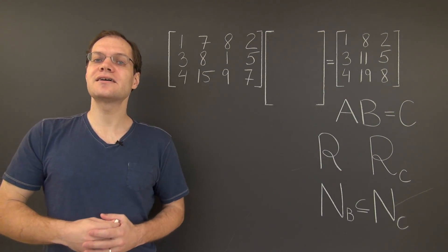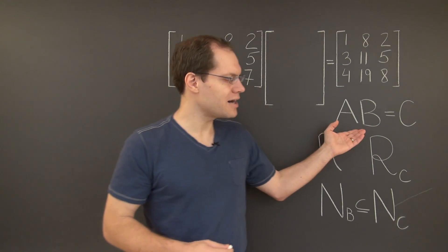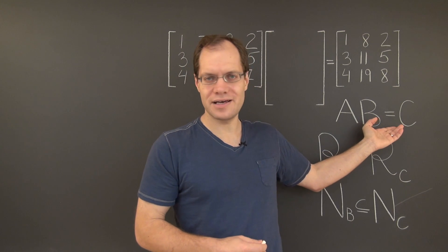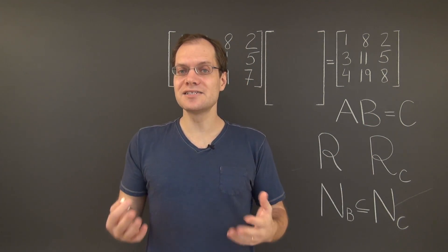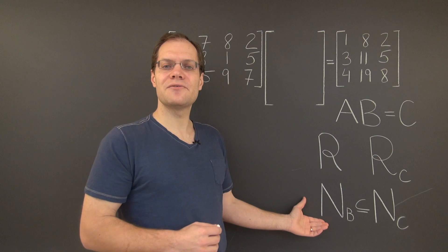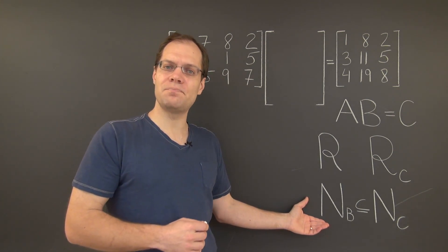In this video, we'll consider the column space of the product AB. We'll again call that matrix C. In another video, we considered the null space of C, and we discovered that it's related to the null space of B.